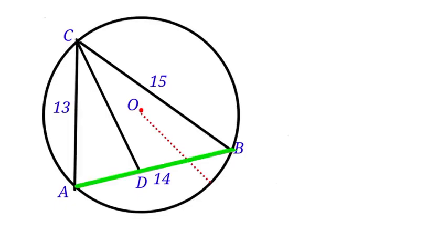AB is 14 units. Suppose AD is X, so DB will be 14 minus X. Line CD is the height of this triangle. Let us call it H.